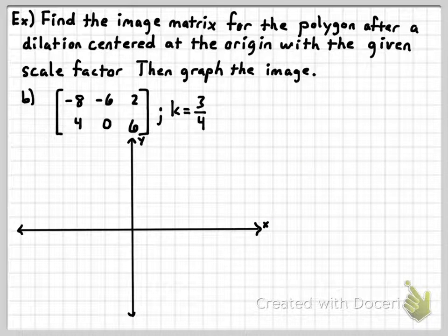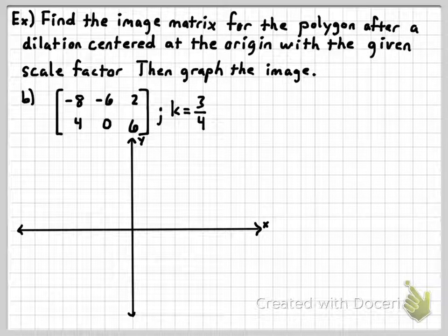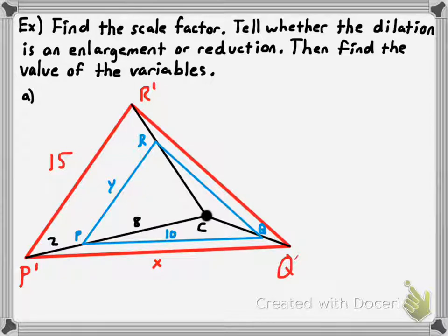Now I was going to go through another graphing problem, but you've seen all you have to do — multiply each coordinate by the scale factor. So let's move on. You're also going to be given pictures that look complex because there are segments of different colors representing a dilation. The directions will ask you to find the scale factor, indicate whether it's an enlargement or reduction, and find the value of variables. This turns out to be a simple problem once you understand what's shown.